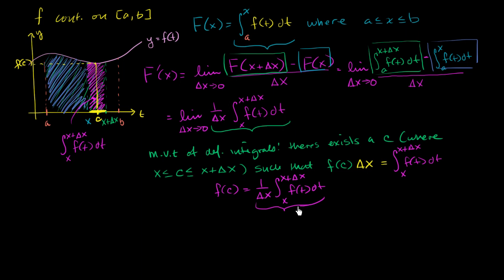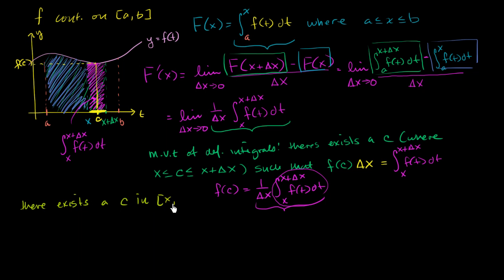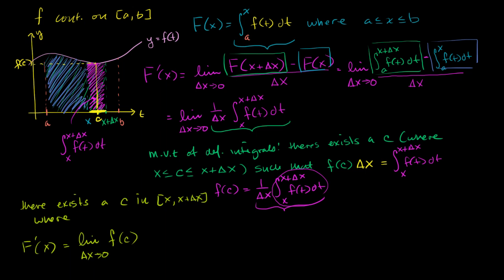Another way of rewriting this: there exists a c in that interval where f of c equals 1 over delta x times the definite integral from x to x plus delta x of f of t dt. This is often viewed as the mean value of the function over the interval — you take the area and divide by the base to get the mean height. This is useful because it is exactly what we got in the expression for F prime of x. So there must exist a c such that F prime of x equals the limit as delta x approaches 0 of f of c.